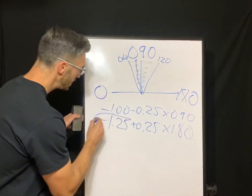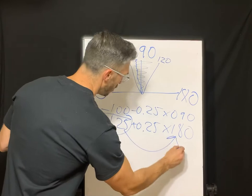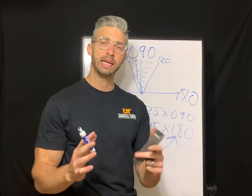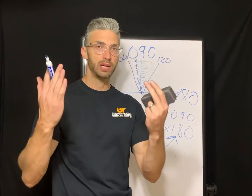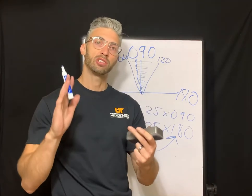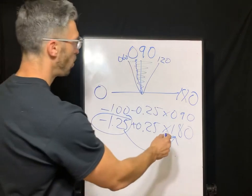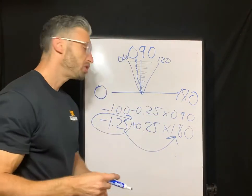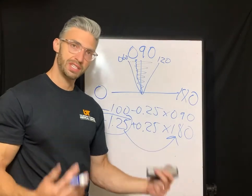Okay? So this is against the rule astigmatism example. And what do we do? If it's in minus cylinder form, we could transpose it. So we get negative one and a quarter, plus a quarter, axis 180. We have more minus power along the 180. Again, the logic is you need more minus power in the lens along a particular axis that is steeper.